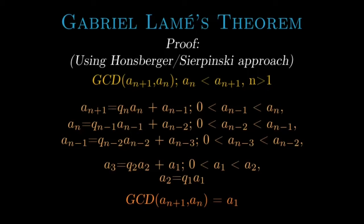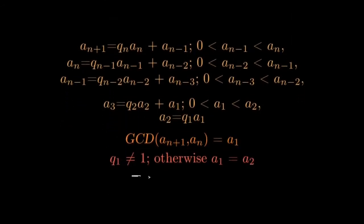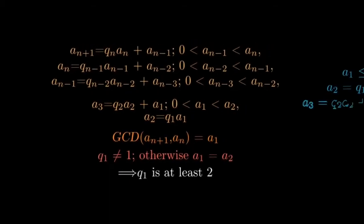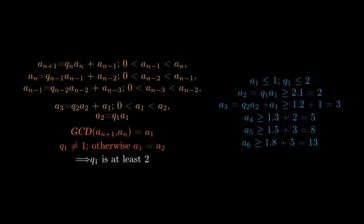Since the numbers involved here are all natural numbers, they are at least 1. However, note that q_1 cannot be 1, as that would imply a_2 equals a_1, which contradicts the inequality in the previous step. So q_1 is at least 2. Now we need to proceed back up these stairs. We have a_1 greater than or equal to 1 and q_1 greater than or equal to 2, giving a_2 which is equal to q_1 times a_1 greater than or equal to 2.